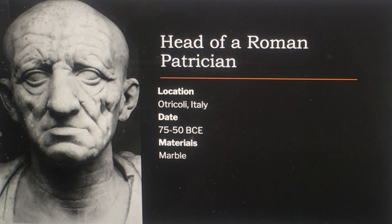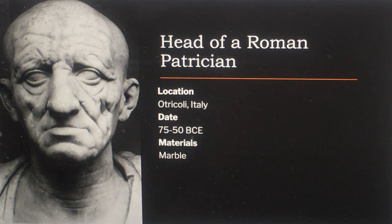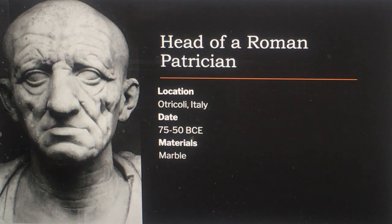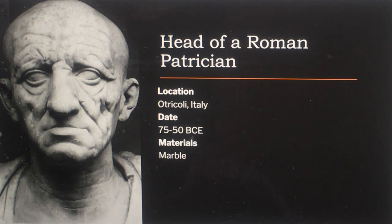This is the Head of a Roman Patrician, located in Otricoli, Italy, 75 to 50 BCE, made of marble. One of the interesting things about the Romans is they were the first to actually make portraits of people — the individual became more important than the idealized look that the Greeks, Etruscans, and Minoans all had in their sculpture and paintings.